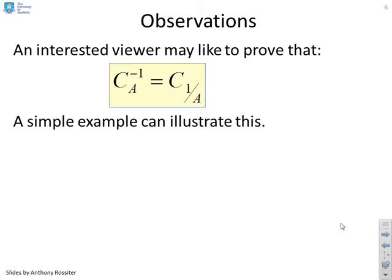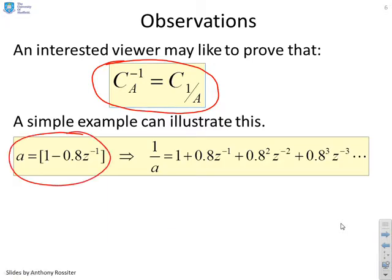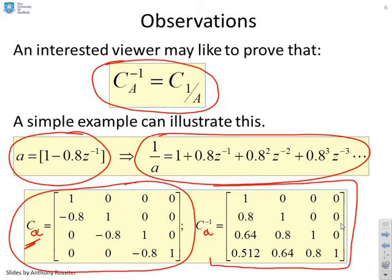Some observations. You can show that CA inverse is actually equal to the C matrix of 1 over A. I can use a simple example to show this. If you wrote A equals 1 minus 0.8 Z inverse and then said I'm going to find 1 over A, you'd find you got 1 plus 0.8 Z inverse plus 0.8 squared Z minus 2 and so on. If you form the CA matrix, you would find you get this matrix here. If you stick that into a piece of code and do the inverse, you'll get this matrix which clearly is the Toeplitz matrix based upon this polynomial. It's easy to do a generic proof, so I will leave that to you.